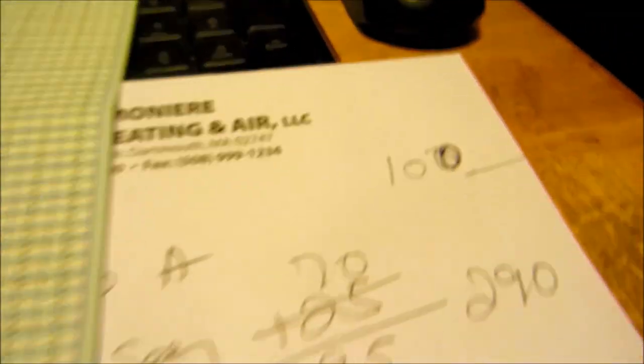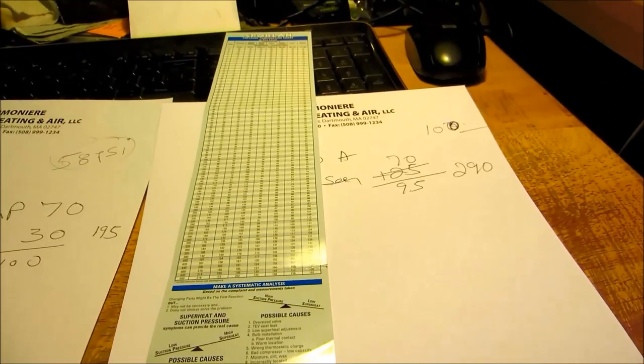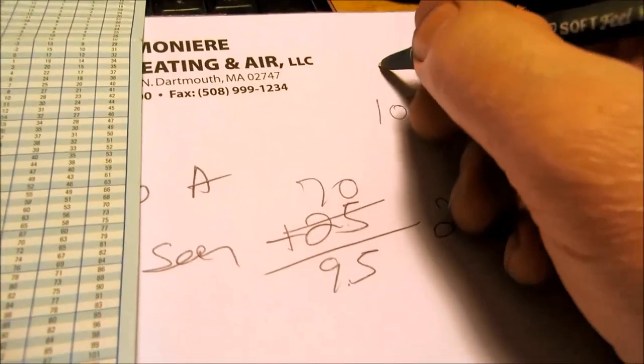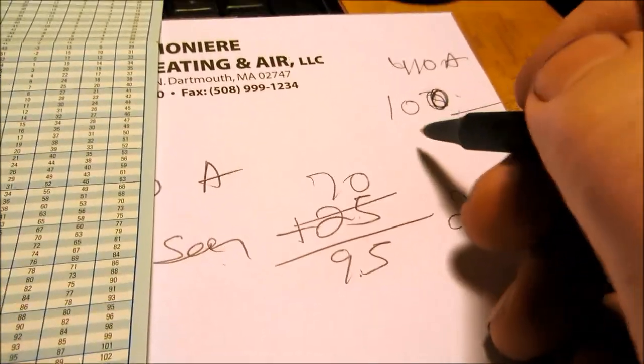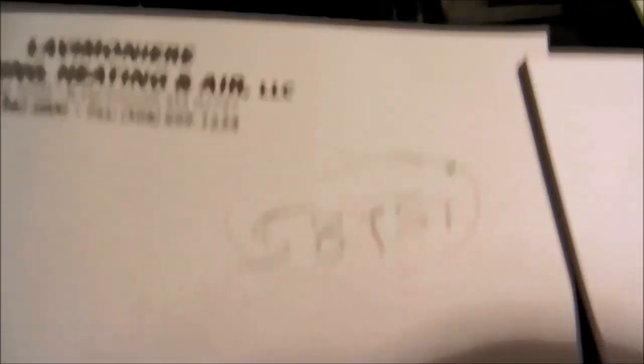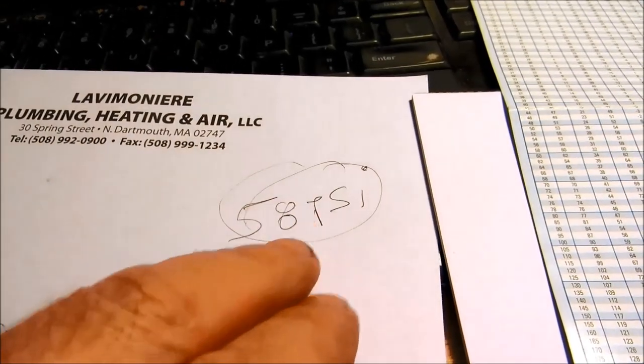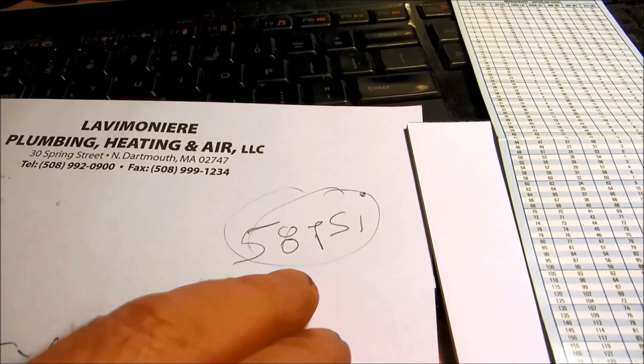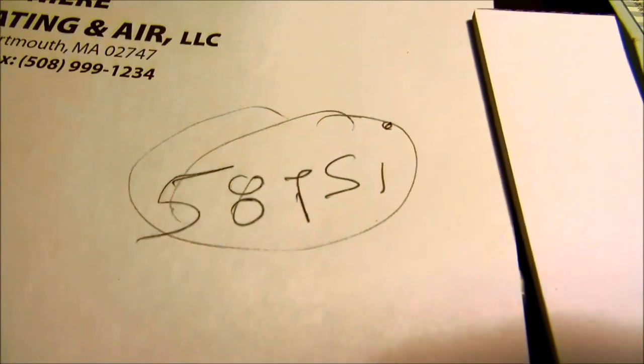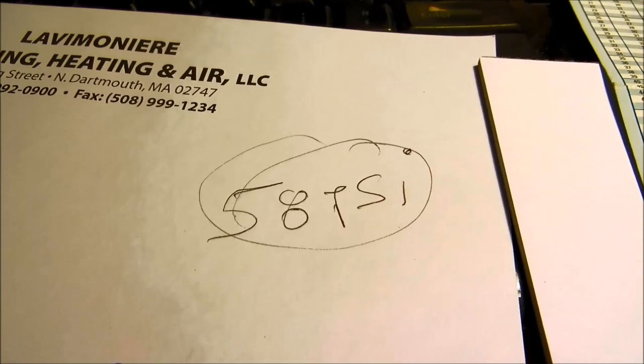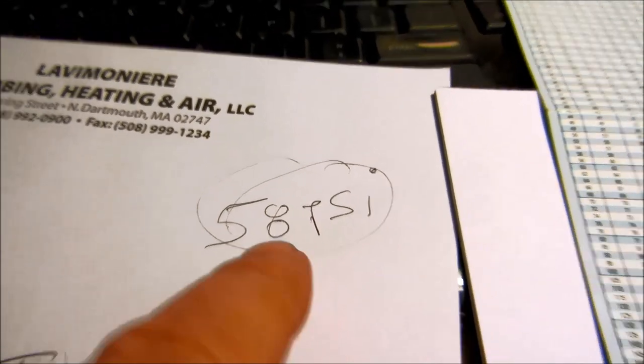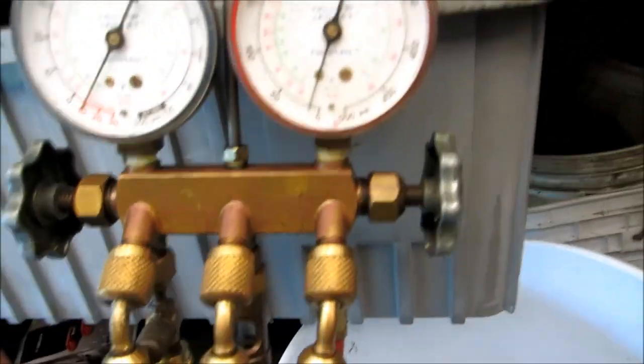This is the temperature pressure chart on 410a. 31 degrees is 100 PSI. I always say anything below 100 you really need to be concerned about. You might have an airflow problem or could be low on charge. That's the suction pressure you want to be above. Usually it's 110 to 120 on the suction pressure.